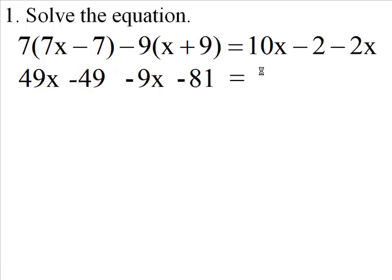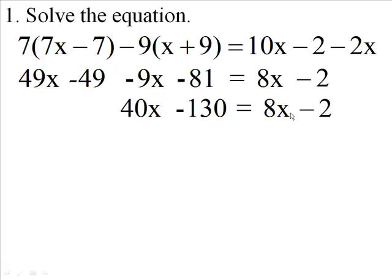Bring down 10x minus 2x, this is 8x. Bring down the negative 2. Now on the left side we'll have 49x minus 9x, that's 40x. Negative 49, negative 81, negative 130. Bring down the 8x minus 2.